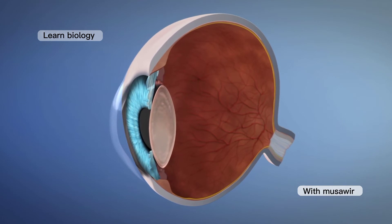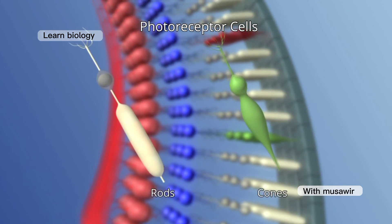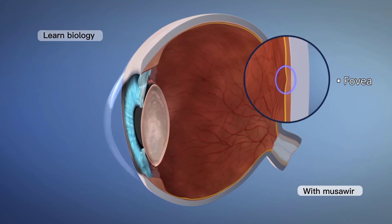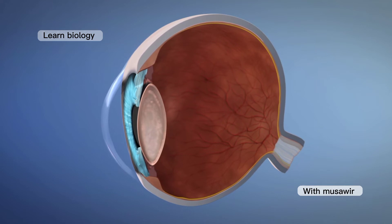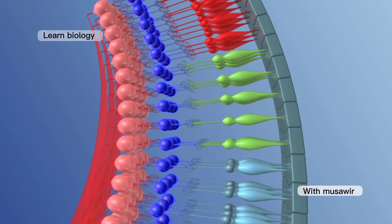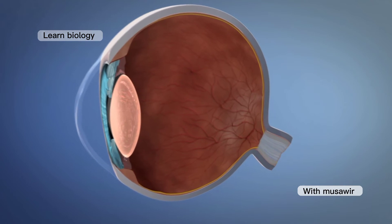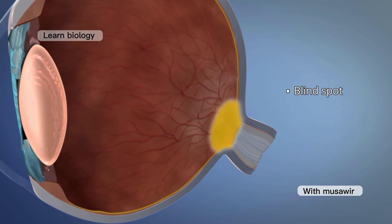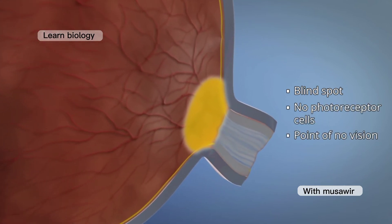The inner retina contains two types of photoreceptor cells: rods and cones. The fovea, or yellow spot, lies at the back of the eye at the center of the eyeball. It contains the maximum number of photoreceptor cells, and particularly the cones. Just below the fovea is the blind spot. The optic nerves leave the eye from this point, and there are no photoreceptor cells here. This is the point of no vision.